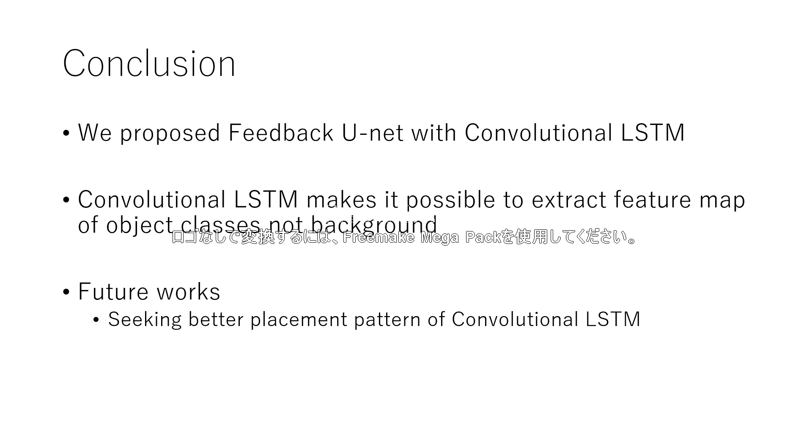We propose feedback U-Net with convolutional LSTM. Our model uses feedback process like human brain. Convolutional LSTM makes it possible to extract feature maps of object class, not background. Especially, classes with small areas are influenced by position where convolutional LSTM is used. There may be better placement patterns of convolutional LSTM than our approach. This is the subject for future works.